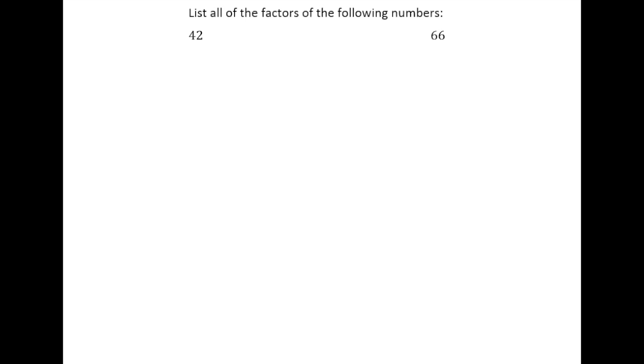In this lesson we're going to talk about how to list the factors of numbers. So let's start with the number 42. Our goal here is basically to list every pair of numbers that multiply together to make 42.